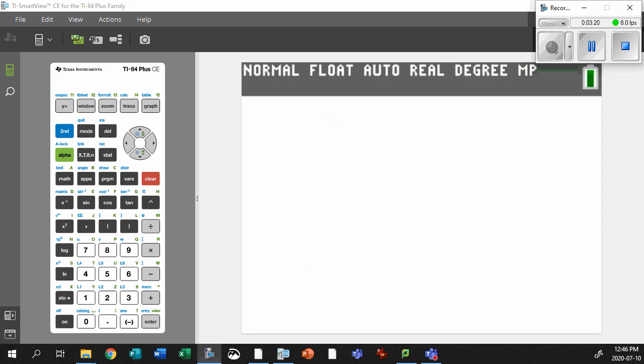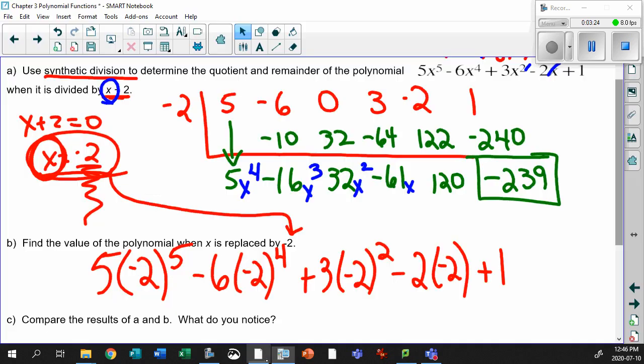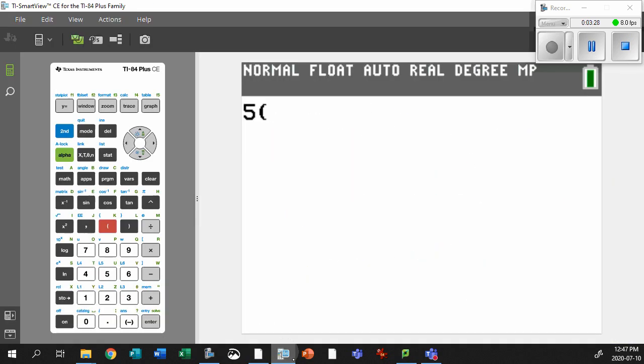So let's put them in. 5 bracket, just like you saw back here, throw it in the calculator exactly the same way. Minus 5 minus 2 bracket to the power of 5. Minus 6 bracket minus 2 bracket to the power of 4. Remember, you don't need a zero placeholder here when you're substituting back in, because the zero placeholder is just going to be zero anyway. Plus 3 bracket minus 2 bracket squared. Minus 2 bracket negative 2. Plus 1. That's huge. Good thing we wrote that down. Hit enter.